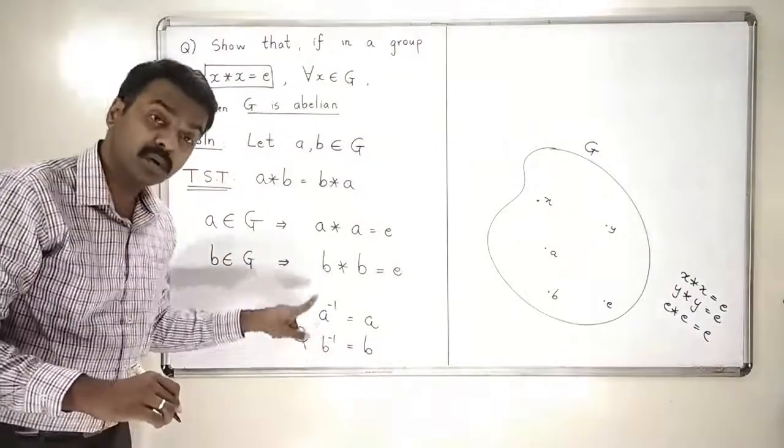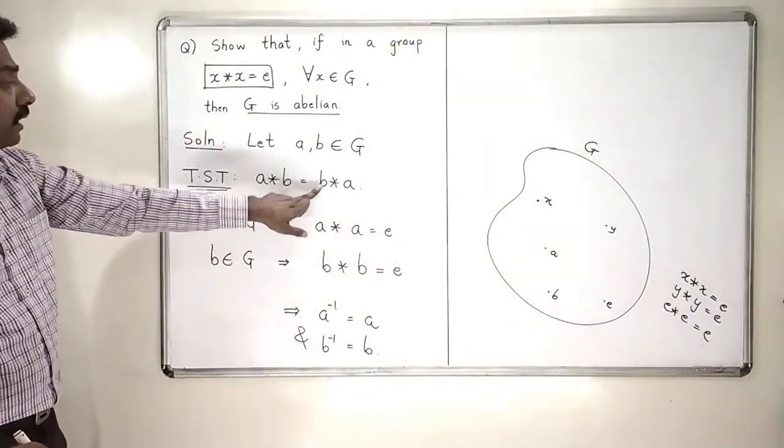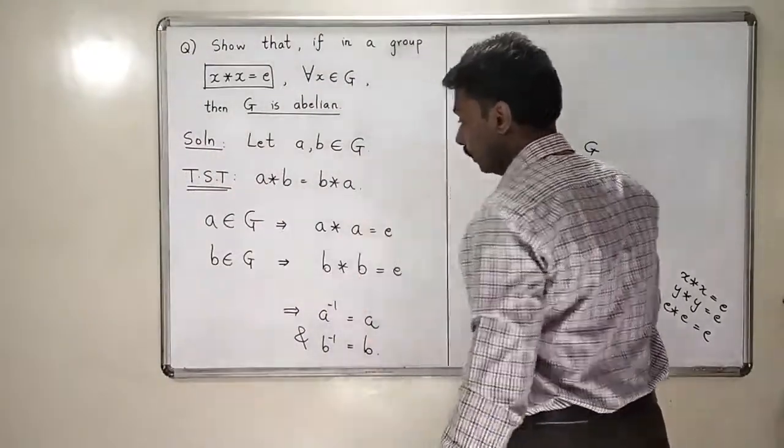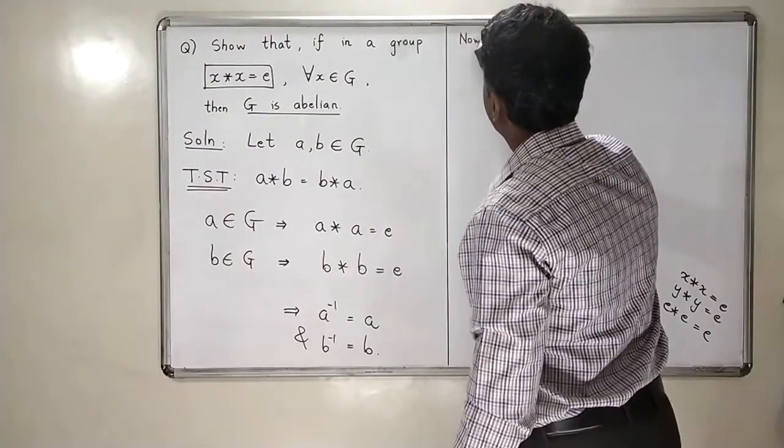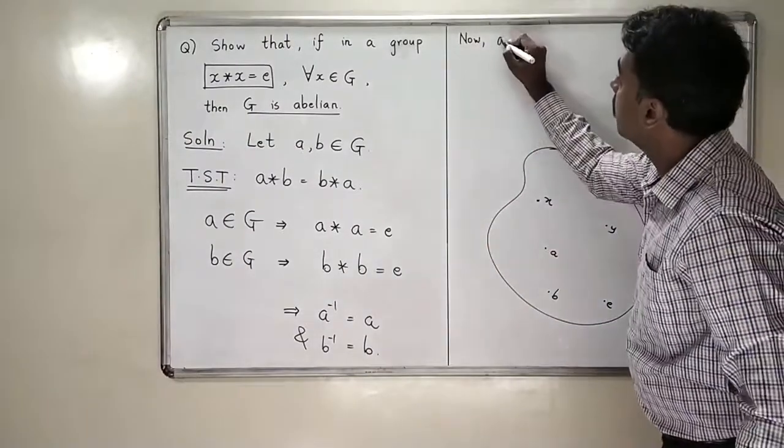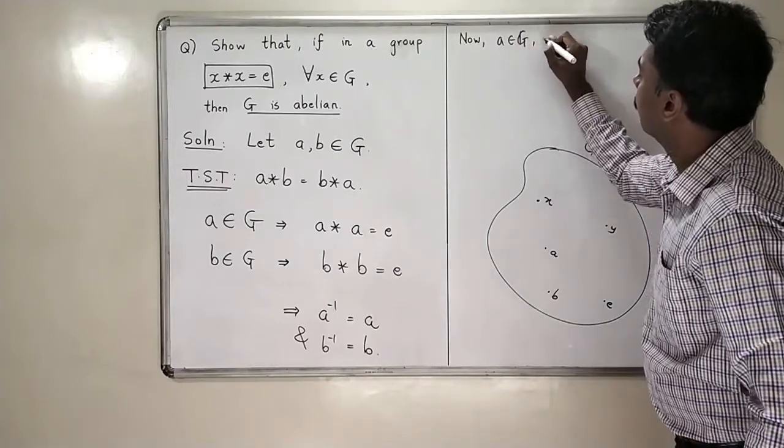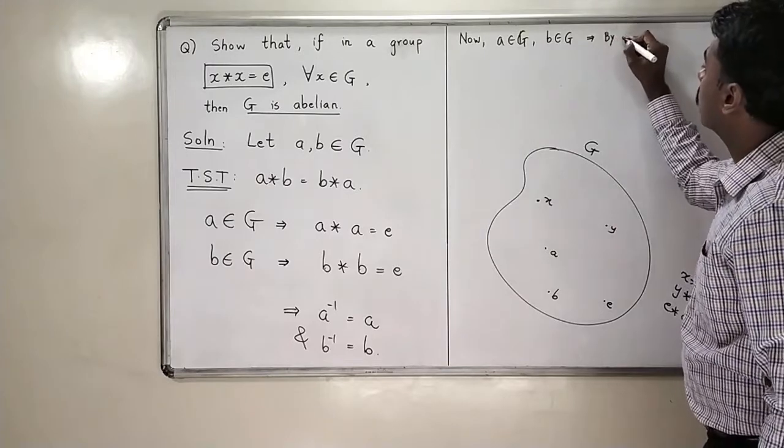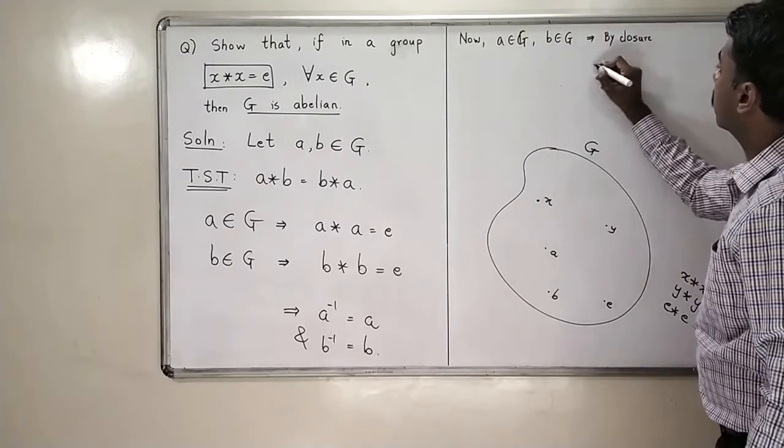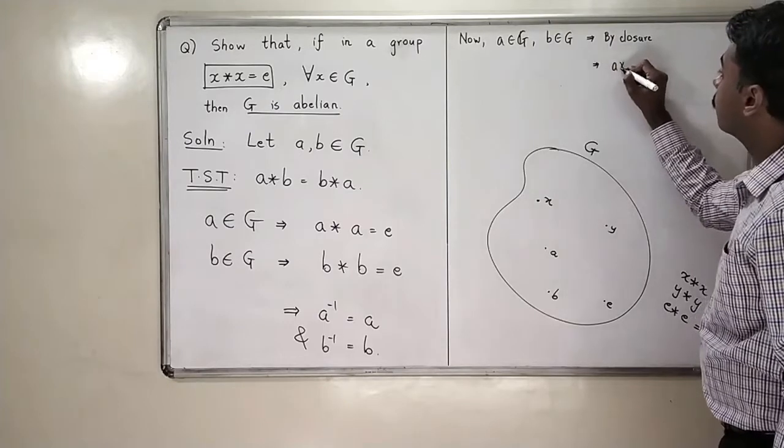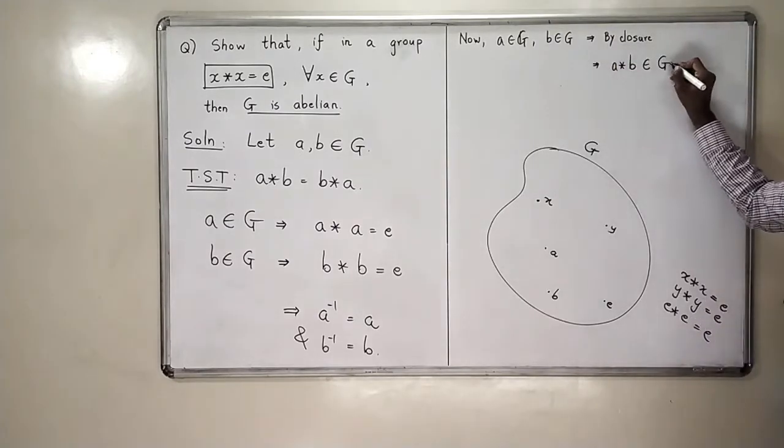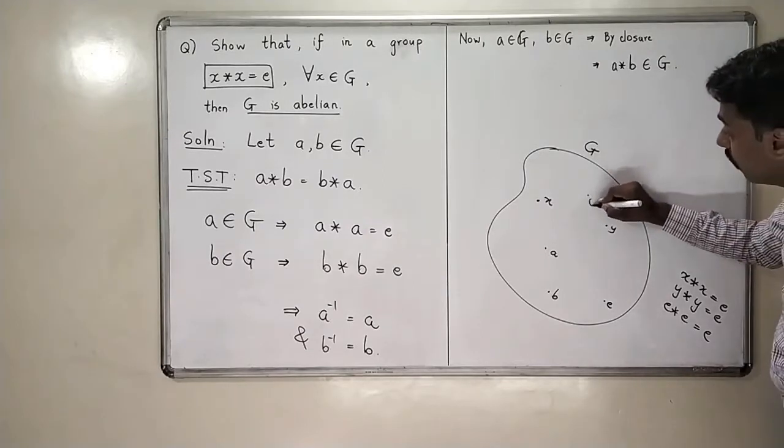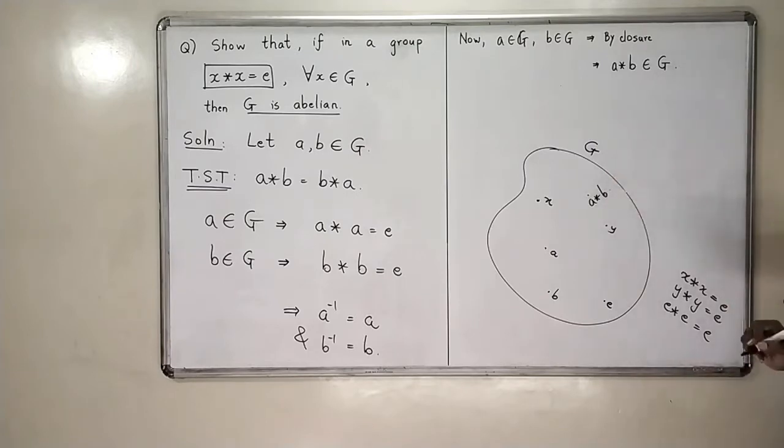Now these two things are going to help us a lot. I want to show that a star b is equal to b star a. Please don't forget this what we want to prove. Now, a is in G, b is in G. Therefore, by closure what can I say? By my closure action, obviously, a star b will also be in G. So a star b will not go outside its set. It will also be inside the set.